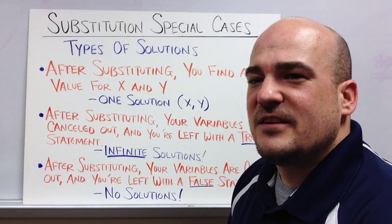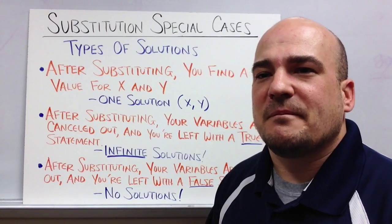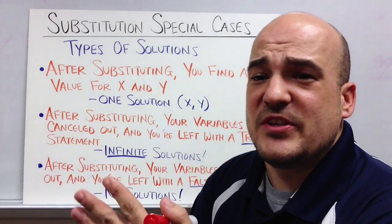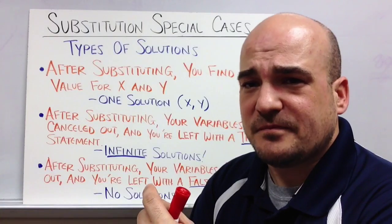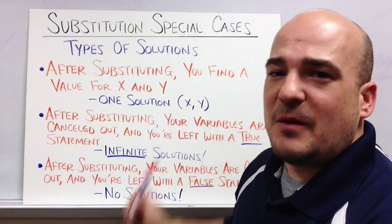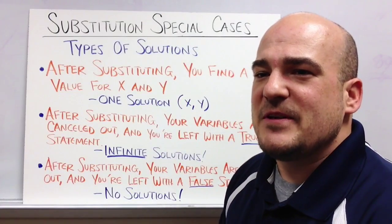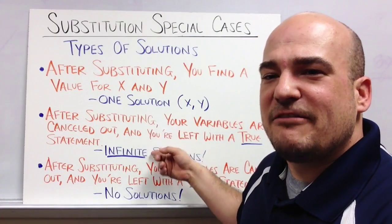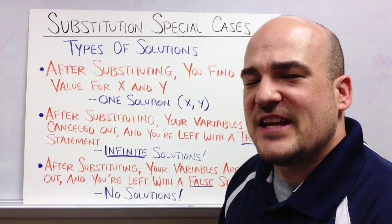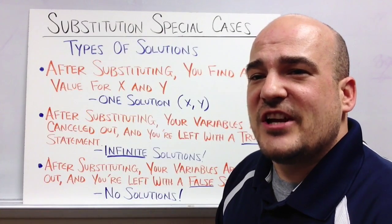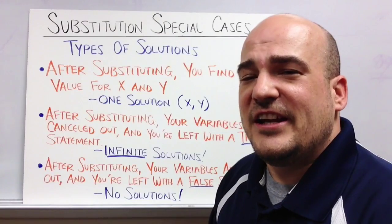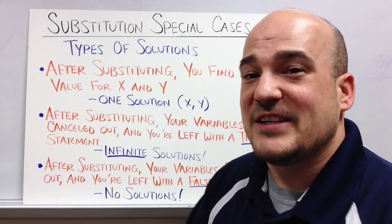So hopefully this gives you a little insight into what else is going on with systems of equations when you solve using substitution. Again, most of the time we're going to get one solution, x comma y. That's the most common thing that happens. But this is just a heads up in case you don't get that for an answer, what your solution means or what the answer to that system of equations is. Hey, thanks for watching. I hope this comes easy to you. There's a few more examples for you to try in your notes. So try those examples and we'll talk about them in class. Thanks for watching.